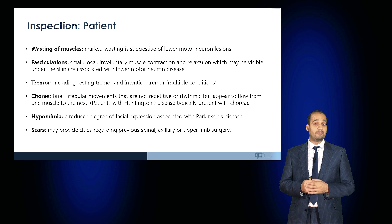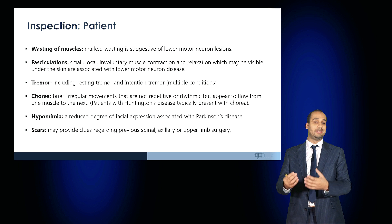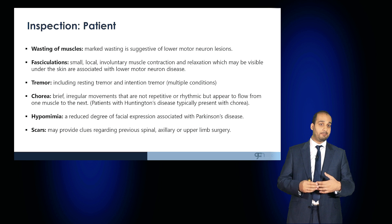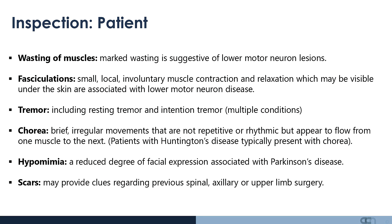A patient may have a tremor — a resting tremor or an intention tremor — and there are multiple etiologies. At rest, the patient may have choreiform movements: brief irregular movements that are not repetitive or rhythmic but appear to flow from one muscle to the next. Patients with Huntington's disease typically present with chorea. Hypomimia — a reduced degree of facial expression associated with Parkinson's disease — is something you may notice on inspection.